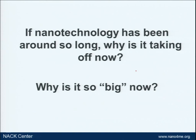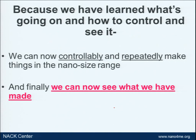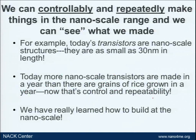Nanotechnology has been around for a long time, but why is it taking off now? Because we have learned what's going on, how to control it, and how to see it. The Romans could not see the nanoparticles they were using. The people in the Middle Ages didn't know the size or distribution of the nanoparticles they were using, nor did the Renaissance Italians. But today, we can controllably and repeatedly make nanoparticles and all sorts of things at the nanoscale, and most importantly, we can see what we're doing.